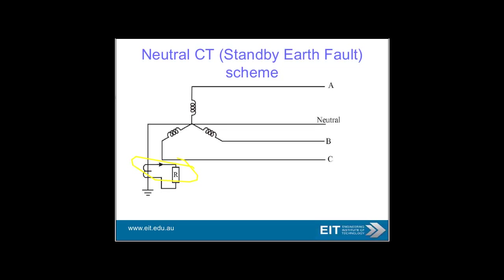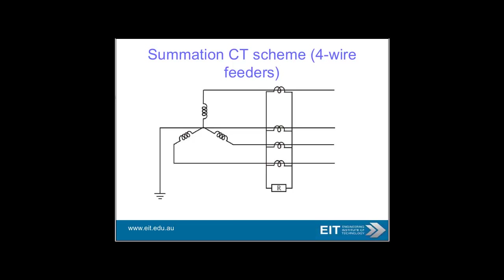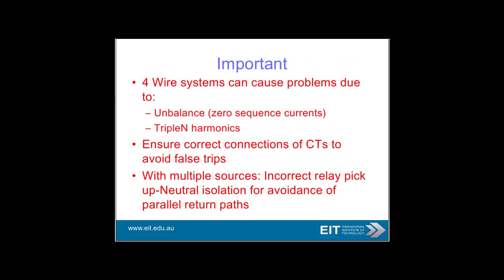Earth fault detection schemes include the neutral CT standby earth fault scheme and the core balance CT scheme, where you look for a balance and flag any imbalance. For four-wire feeders, four-wire systems can cause problems due to unbalance, zero sequence currents, and triplen harmonics. Ensure correct CT connections to avoid false trips, and use the neutral for avoidance of parallel return paths.